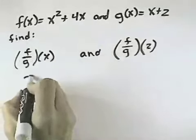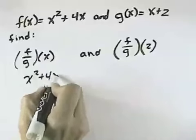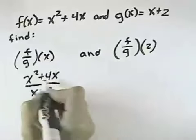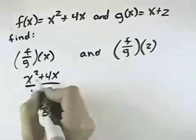So f over g of x would mean take your function f and put it over your function g. In this case, we could factor the numerator, but nothing would cancel, so it won't reduce, so we'd leave it this way.